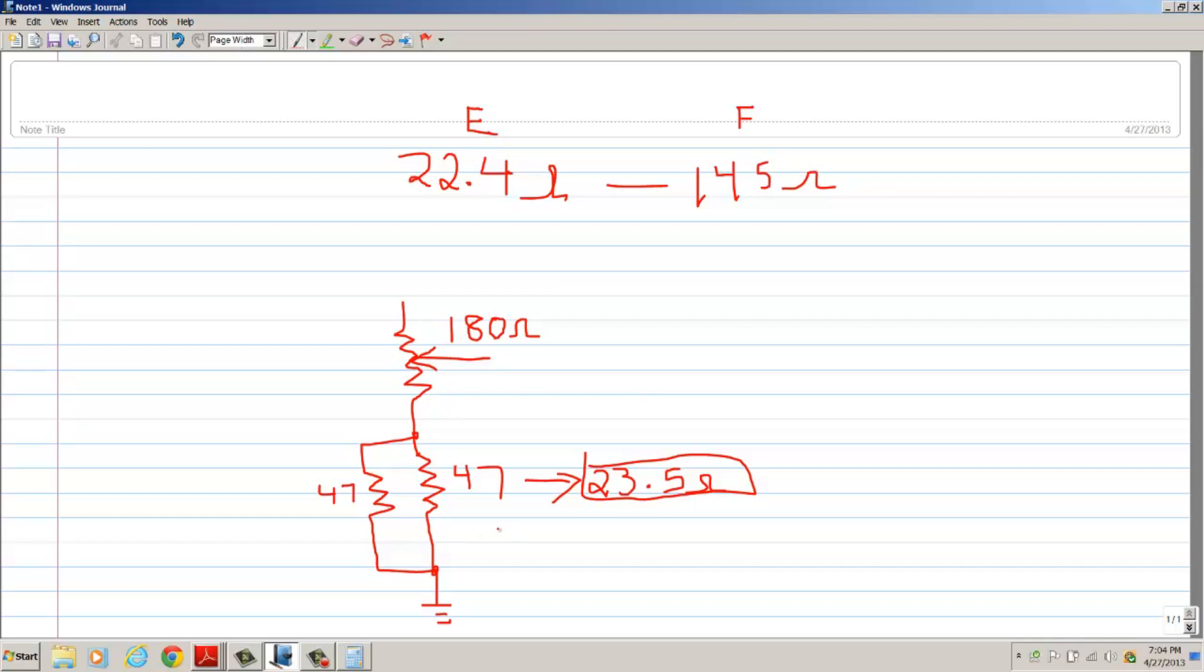So what I really like to have is the 23 and a half here plus... let's subtract it out. I know I want 145 ohms total, so I have to subtract out my 23 and a half, which is going to give me 121 and a half ohms.